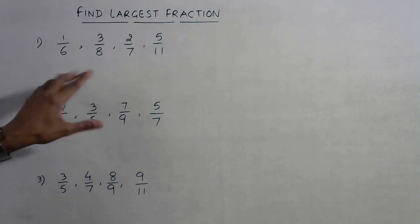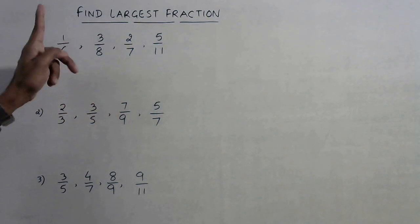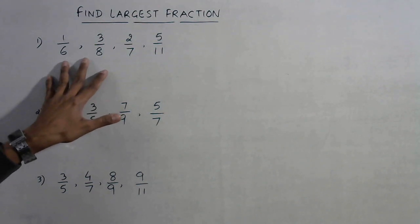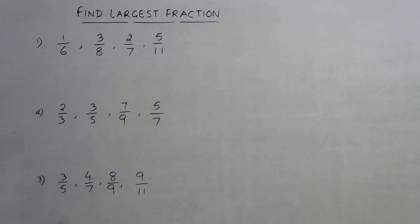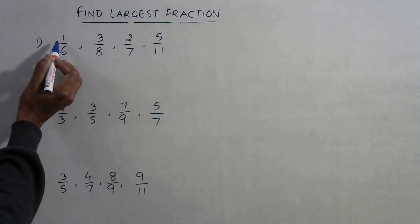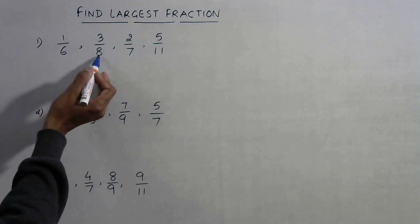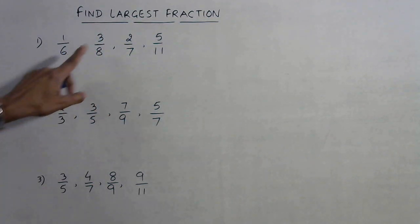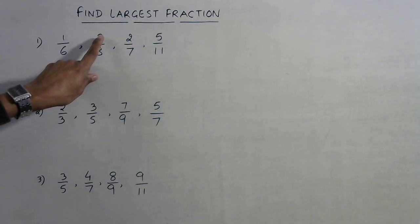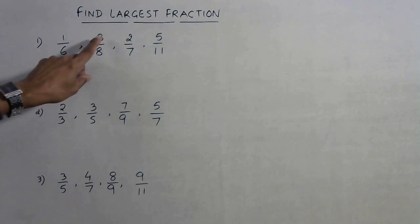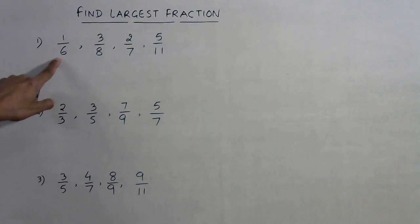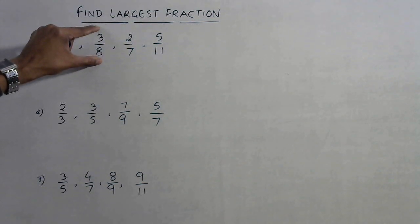I will compare the first two and tick whichever is largest, then proceed. You will take only three to four seconds to find the largest fraction without converting to decimals or taking the LCM. The numerator of the first fraction multiplied by the denominator of the second gives one product, and the other numerator multiplied by the other denominator gives another. The fraction whose numerator gives the larger cross product is the larger fraction.